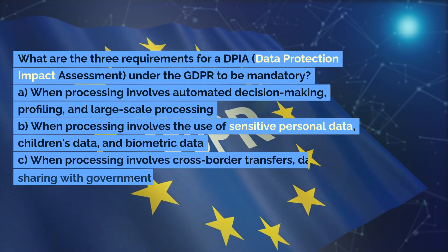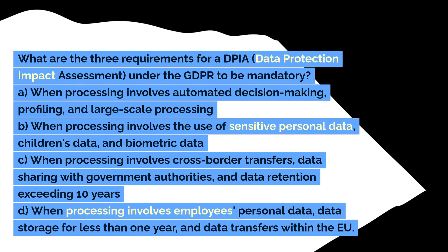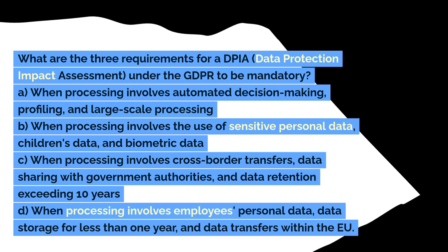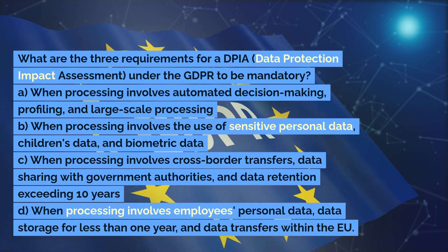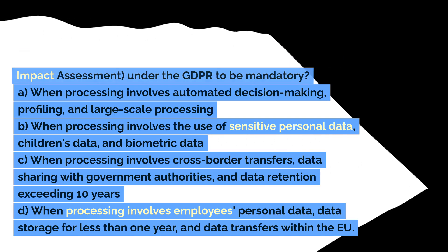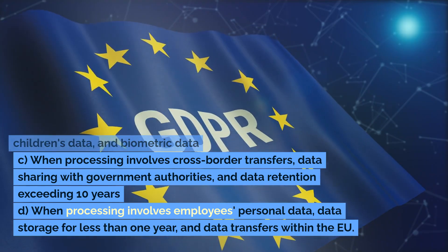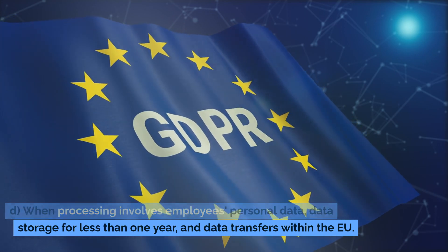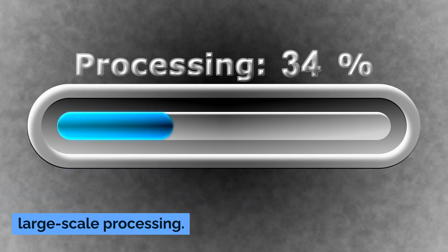What are the three requirements for a DPIA (Data Protection Impact Assessment) under the GDPR to be mandatory? A. When processing involves automated decision-making, profiling, and large-scale processing. B. When processing involves the use of sensitive personal data, children's data, and biometric data. C. When processing involves cross-border transfers, data sharing with government authorities, and data retention exceeding 10 years. D. When processing involves employees' personal data, data storage for less than one year, and data transfers within the EU. Correct answer: A. When processing involves automated decision-making, profiling, and large-scale processing.